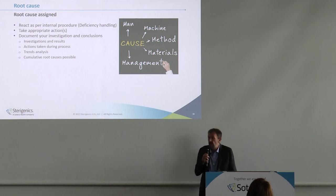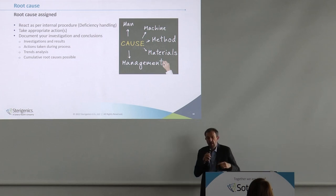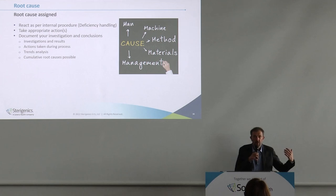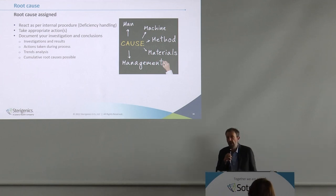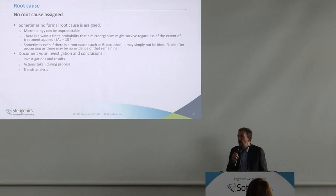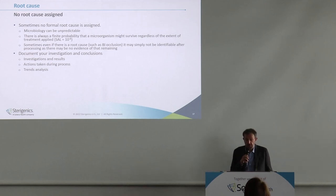Once all information is gathered, it's binary: either we have a root cause or we don't. If a root cause is assigned, we need to take the right approach in collaboration with the customer and stakeholders. As per GMP rules — what is not written does not exist — we must document everything properly in a full investigation report. We also need to check whether it's a unique root cause or a cumulative one: for example, being on the edge with storage temperature and processing temperature together can lead to failure. We also need to perform trend analysis to check for any drift or outliers in the distribution.